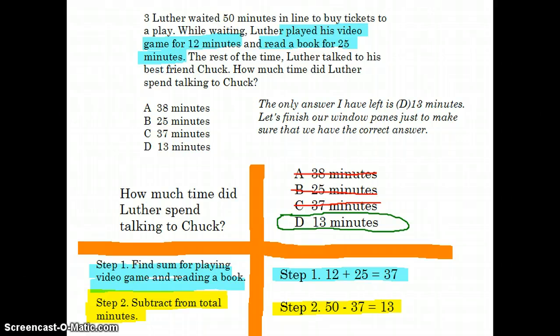Now step two, we're going to take the total amount of minutes, which is 50, that's what we started off with, 50 minus the 37 minutes is equal to 13. So we can see that our answer choice D, 13 minutes is correct.